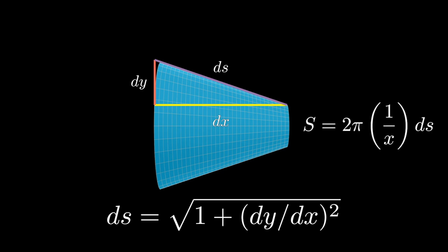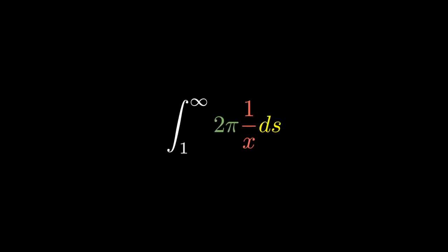So to calculate the surface area of Gabriel's horn, we just need to evaluate the integral from 1 to infinity of 2π times (1/x) ds.